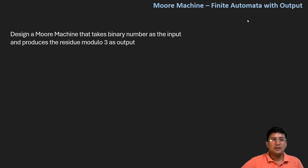For example, if I am taking a binary number whose equivalent is seven, then seven mod three should produce the answer one. Similarly, if I take eleven as a binary number, then eleven mod three equals two should come as the output.